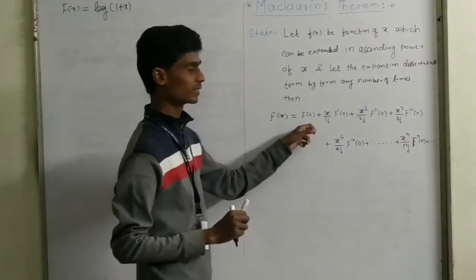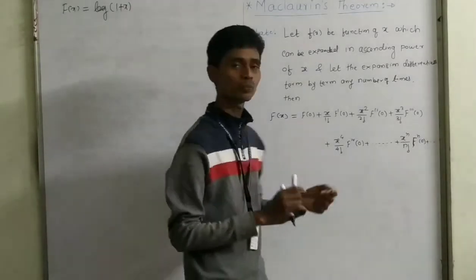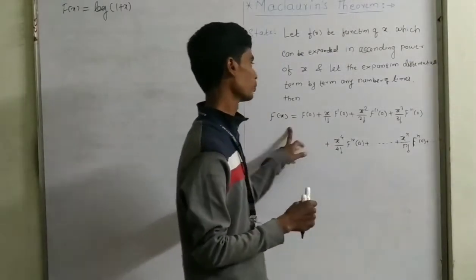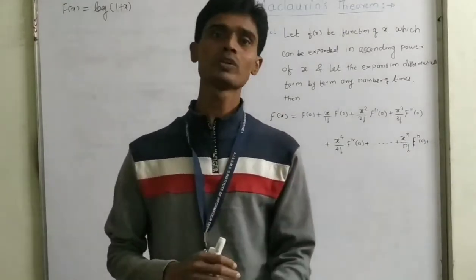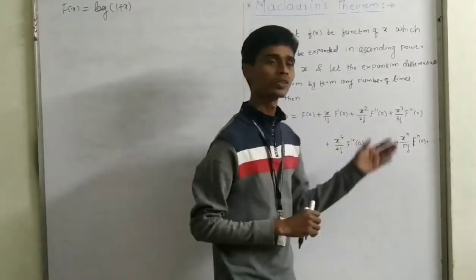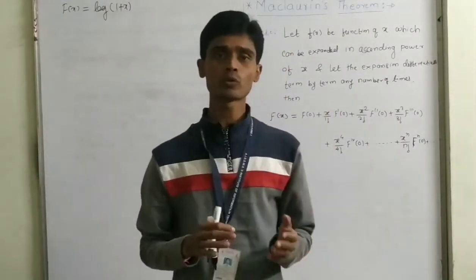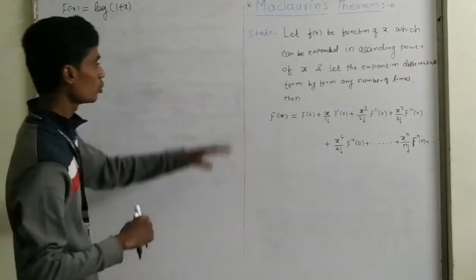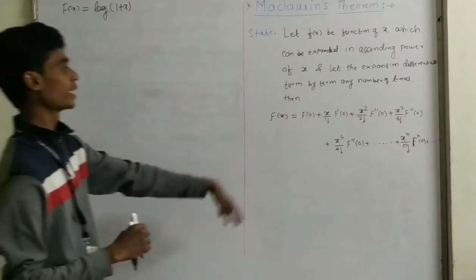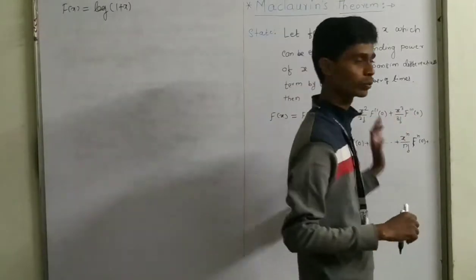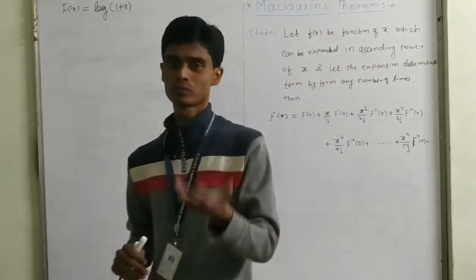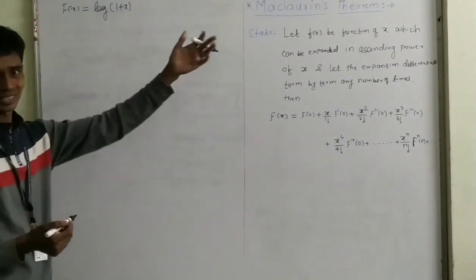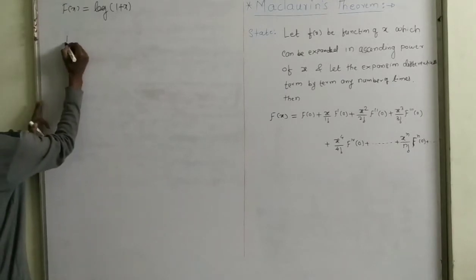So how to find out this? f(0) means put x = 0 and we get f(0). f'(0) means find the first derivative then put x = 0, and we get f'(0). f''(0) means find the second derivative and put x = 0, and we get f''(0). Like this. So to find the expansion of log(1+x), first we need to find the first derivative, second derivative, third derivative, fourth derivative, up to the fourth or fifth — or you can go up to the sixth or seventh.